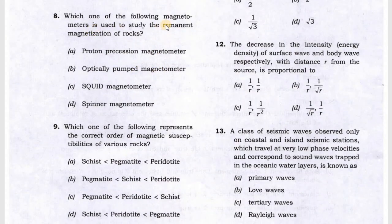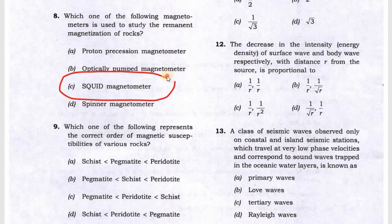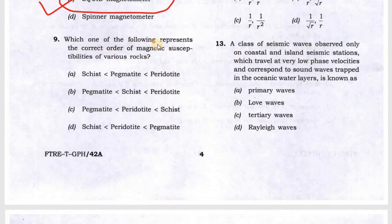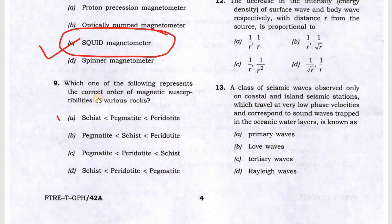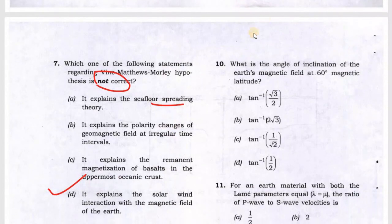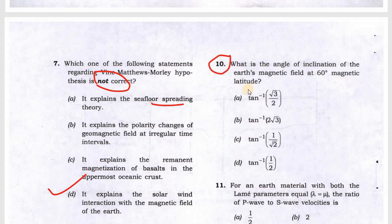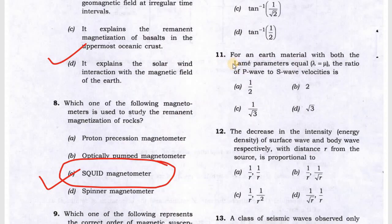Next question about the remanent magnetization of the rock. This is the SQUID magnetometer, superconducting magnetometer they use most of the time. Next they are asking which of the following represents the correct order of magnetic susceptibility of various rocks. Most probably answer will be A. Next question 10: what is the angle of inclination of the earth's magnetic field at 60 degrees magnetic latitude? This is the simple formula tan i equal to 2 tan lambda.